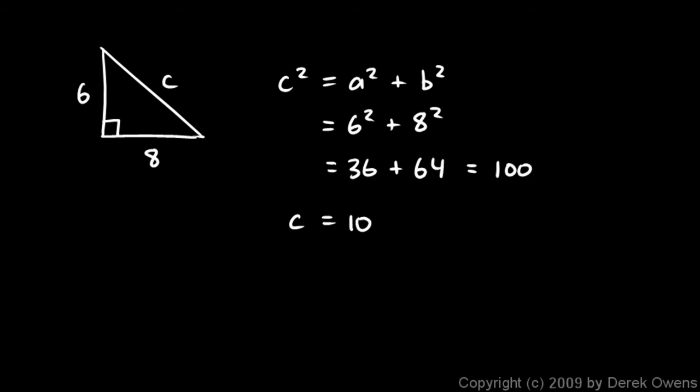So we have 6, 8, and 10. Those numbers are also a Pythagorean triple. And notice that these numbers 6, 8, and 10 are multiples of the 3, 4, and 5 that we had earlier. So we had 3, 4, and 5, and doubling each of those gives us 6, 8, and 10. The 6 is twice the 3, and the 8 is twice the 4, and the 10 is twice the 5.